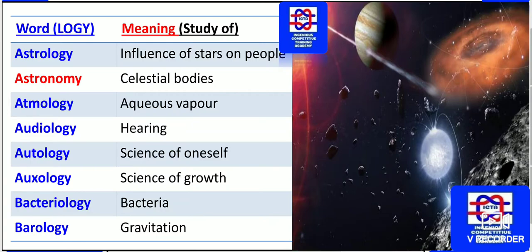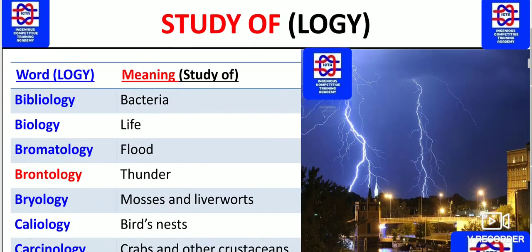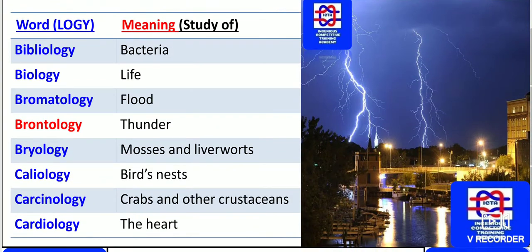The study of gravitation or pressure is known as barology — 'baro' means gravitation or pressure. Bibliology — please remember, bibliology is actually the study of books. 'Biblio' means books, so the study of books is known as bibliology. A note: bacteria was incorrectly shown here, so please disregard that.